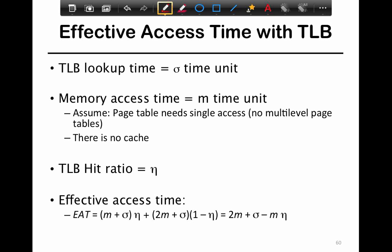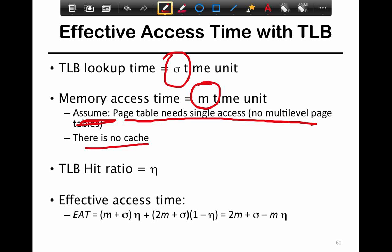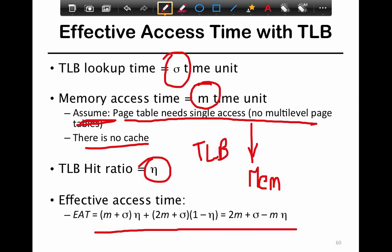Let's try to quantify with a simple equation what the average access time of TLBs could be. Let's say a TLB lookup time is sigma, and memory access time is m. Every page table lookup needs a single access. Assume there are no multi-level page tables and no hardware cache for the data itself — so we have a TLB and all other accesses go to memory. If the TLB hit rate is Zeta, then the effective access time is given by the number of hits multiplied by the average lookup time, plus the number of misses multiplied by the average miss time.